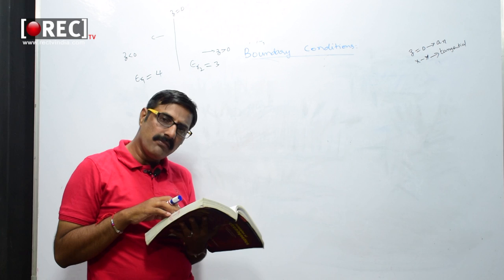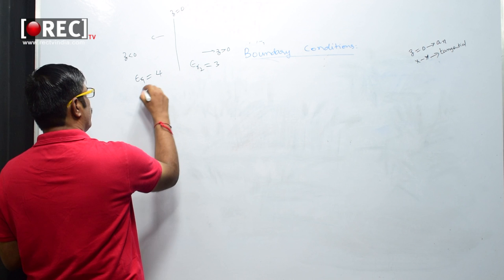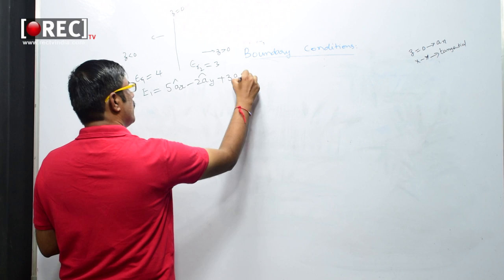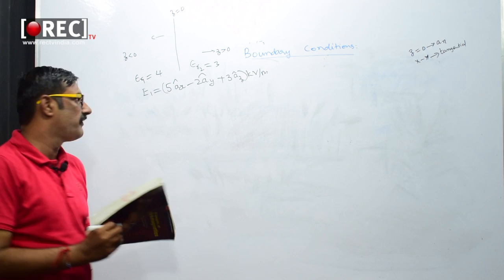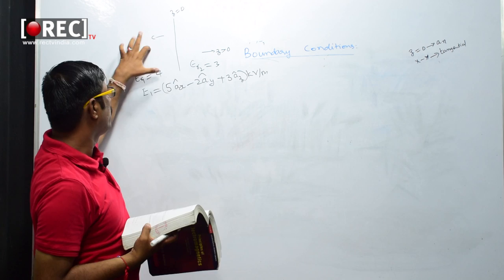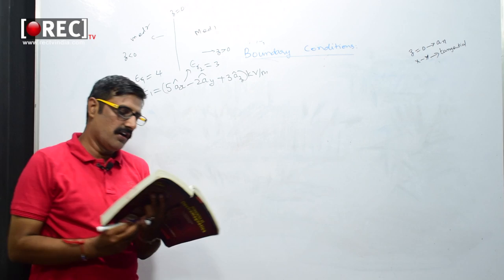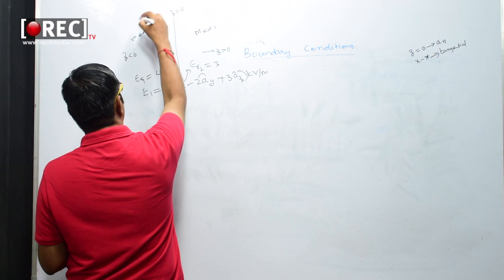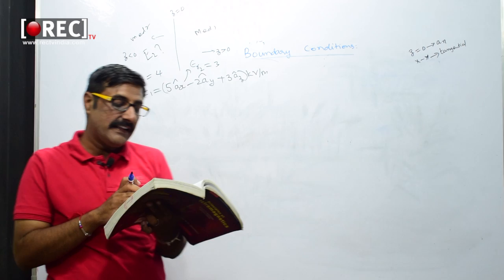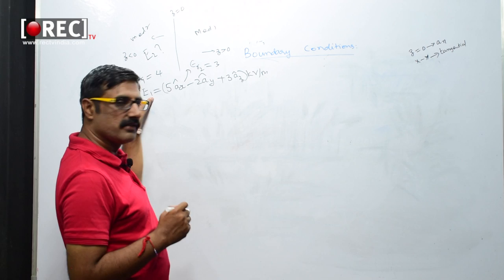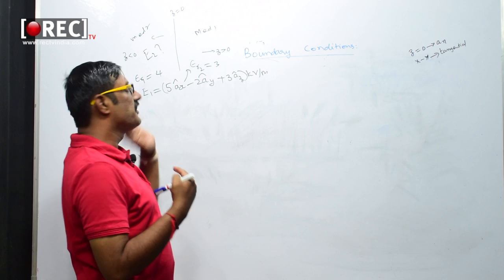A uniform electric field E1 is given for the first medium (z greater than zero): E1 = 5ax − 2ay + 3az kilovolts per meter. He is asking us to find E2 for z less than zero, and also the angles that E1 and E2 make with the interface. From the given E1, I need to identify which components are normal and which are tangential.